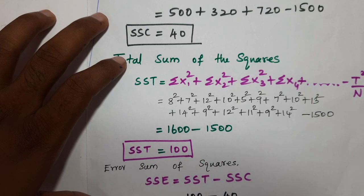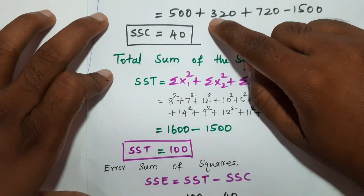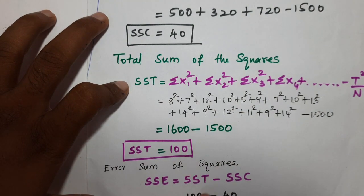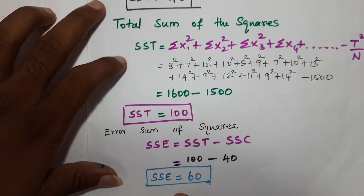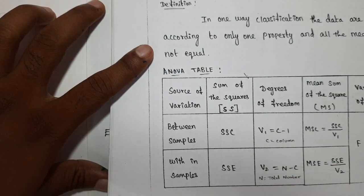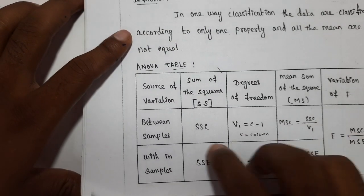The sum of squares of error (SSE) is calculated as SSE = SST minus SSC. We have SST and SSC values already found. SSE = SST minus SSC. This gives the error sum of squares, which we now enter into the ANOVA table.